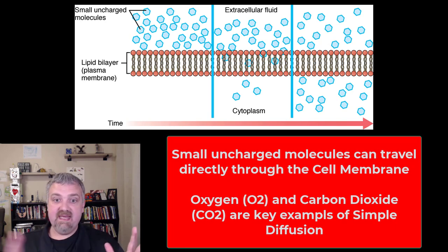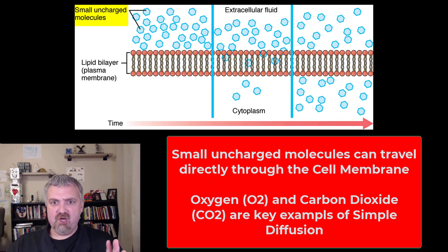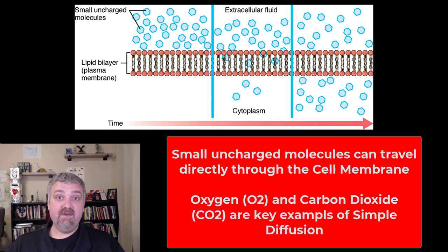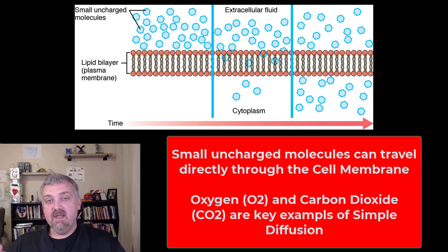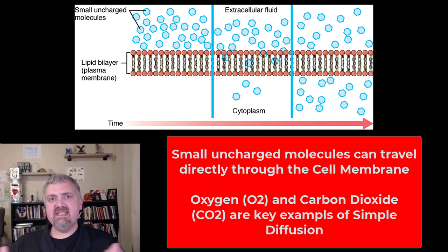This image shows the same thing — small, uncharged molecules, especially things that are lipid soluble, can travel right through the cell membrane. That's what simple diffusion is. Think about gases: oxygen diffuses from the lungs, where there's a lot of it, into your blood where there isn't very much. Carbon dioxide diffuses the other direction because there's more carbon dioxide in the blood coming back to your lungs than there is inside them.